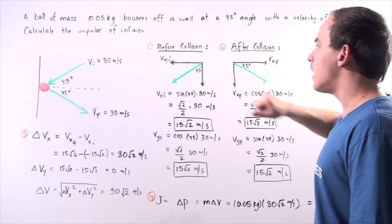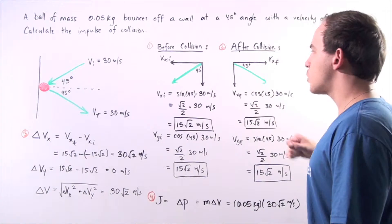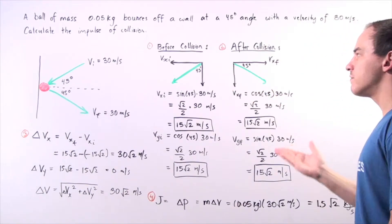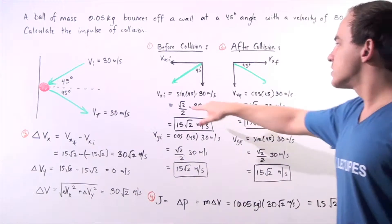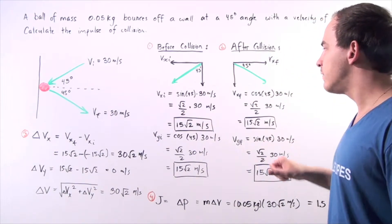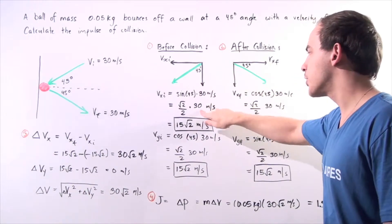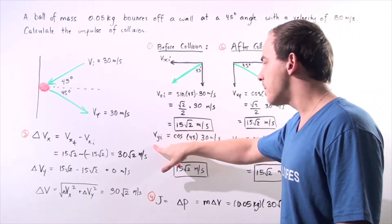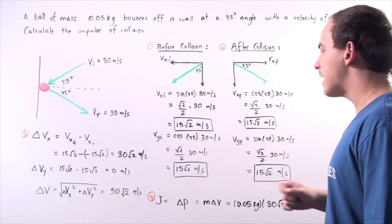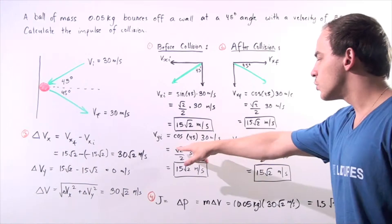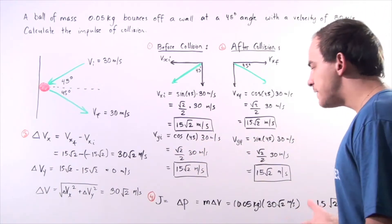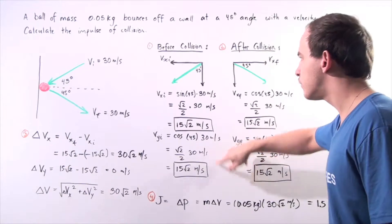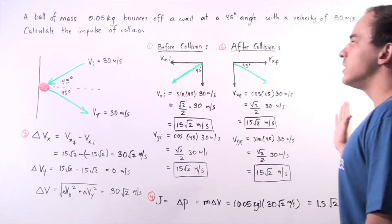We begin by looking at the following triangles. We have a 45-45-90 degree triangle where the base represents the magnitude of the x component and the height represents the magnitude of the y component before the collision. The x component is sine 45, which is square root of 2 divided by 2, times 30, giving a result of 15 radical 2 meters per second. The same step for the y component uses cosine 45, also radical 2 divided by 2, giving 15 radical 2 meters per second. Notice we have the same magnitude for both the x and y component vectors before collision.